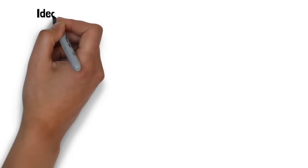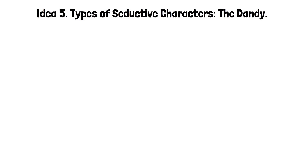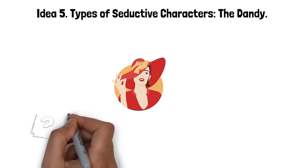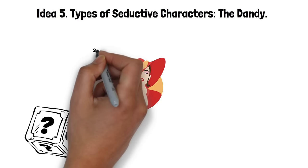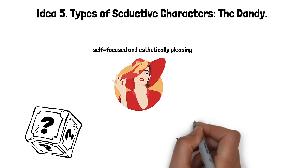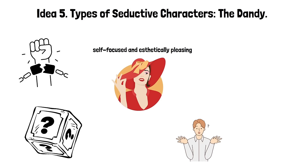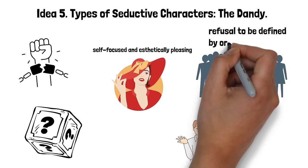Idea 5. Types of seductive characters. The Dandy. The Dandy is a unique type of seducer who defies the usual expectations and norms. This character blurs traditional gender roles and societal conventions, creating an air of mystery and intrigue. The Dandy is self-focused and aesthetically pleasing, often highly fashion-conscious and flamboyant. Their charm lies in their individuality and the excitement that comes with the unexpected. They create an aura of freedom, making those around them feel as if they can break free from societal constraints. The Dandy's allure is their ability to stand out and their refusal to be defined by ordinary standards, which makes them fascinating and irresistible to many.